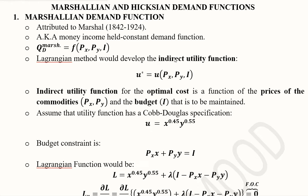It is pertinent to know what the indirect utility function is. It is actually the maximized version of the utility function, which is developed after substituting the Marshallian demand functions into the utility function. The utility function here is written as a function of the price of X, price of Y, and income I.